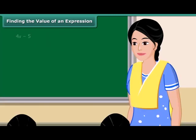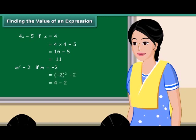Consider the expression 4x minus 5. If the value of x is equal to 4, then the given algebraic expression is equal to 4 into 4 minus 5, which is equal to 16 minus 5, that is 11. Similarly, if m is equal to 2, then the value of the expression m square minus 2 will be equal to 2.